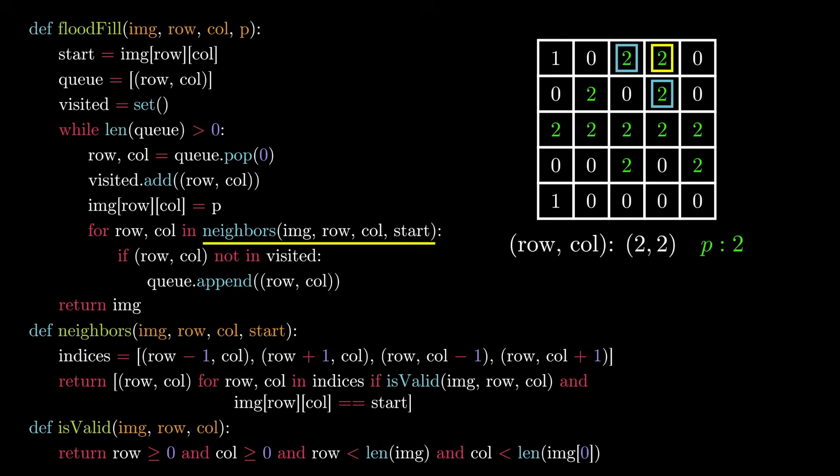And finally that the column index is less than the number of columns in the grid. And it turns out that's really the final piece of the implementation to flood fill. This is a problem I've seen asked quite often in interviews and people sometimes get tripped up because they don't realize that this is really just a graph problem in disguise.